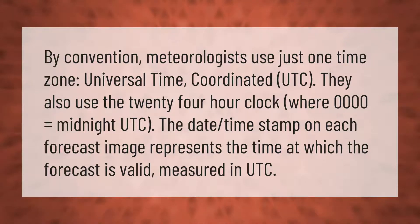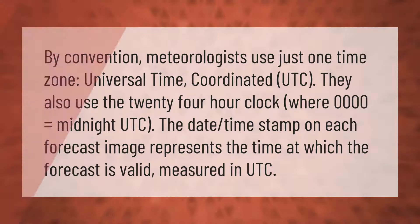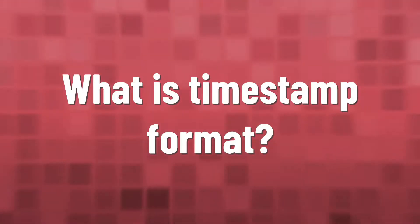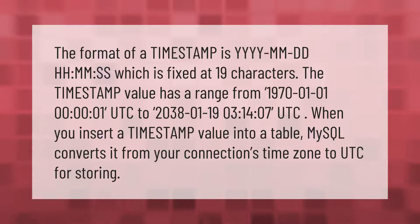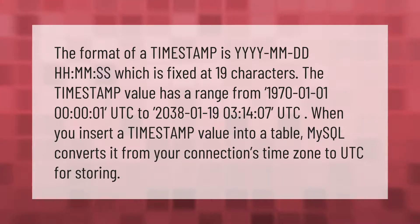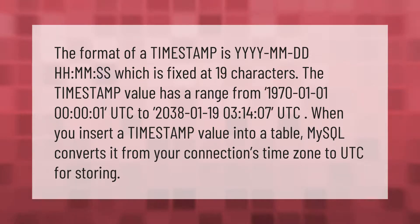The date-time stamp on each forecast image represents the time at which the forecast is valid, measured in UTC. The format of a timestamp is YYYY/MDD/HM/SS, which is fixed at 19 characters. The timestamp value has a range from January 1st, 1970, 00:00:01 UTC to January 19th, 2038, 03:14:07 UTC.